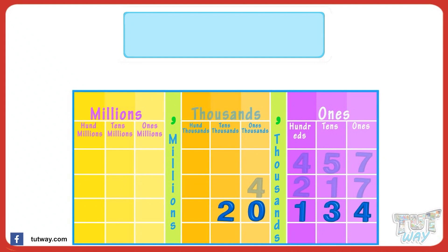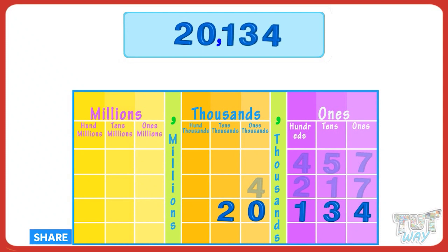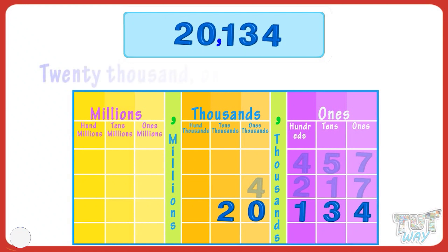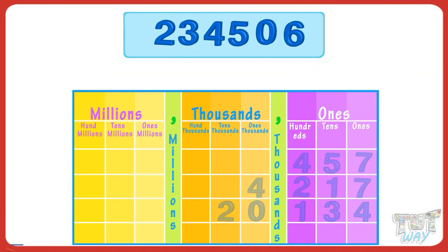Now let's read the number. You have to read numbers separately from all periods along with the period name. Twenty is in the thousands period, so read it as twenty thousands and place a comma. One, three, four are in the ones period — read them as one hundred and thirty four. So we write the number and read it as twenty thousand one hundred thirty four.